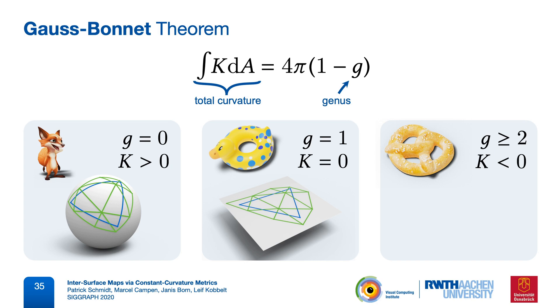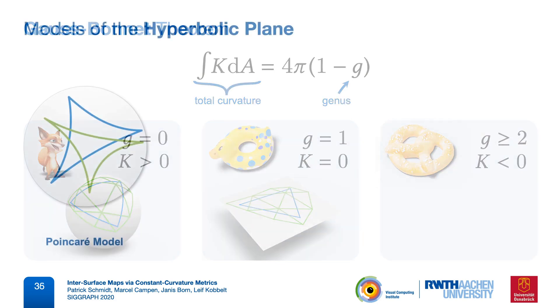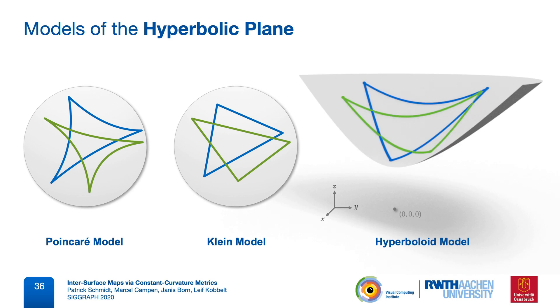How can we represent the hyperbolic plane? Both the sphere and the flat plane can be embedded in Euclidean space without distortion. But the hyperbolic plane cannot. Think of it as being saddle-shaped at every point. This is something that we cannot realize in Euclidean space. Instead, there are a number of models of the hyperbolic plane, like the Poincaré disk, the Klein model, or the hyperboloid model. And each of these is distorted in a different way.